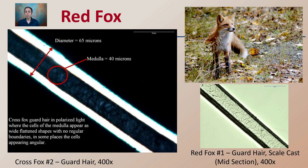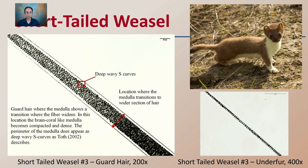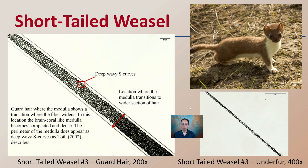This is the midsection of the guard hair. Keep in mind where you're taking the sample — the lower section, the mid, or more towards the tip region — can impact what you see in an image, so it's important to document that when taking pictures. For the short-tailed weasel, the guard hair shows a transition where fibers widen, with a deep wavy S-curves in the medulla. The location where the medulla transitions has a wider section of hair. This is at 200x magnification. The underfur region also shows a very different medulla.